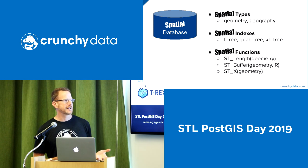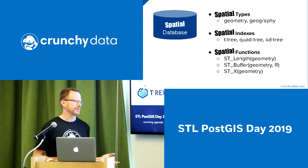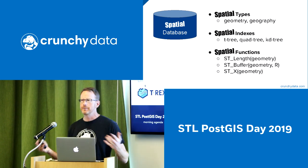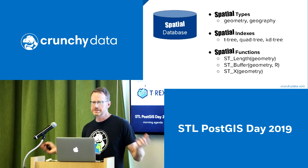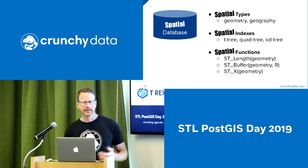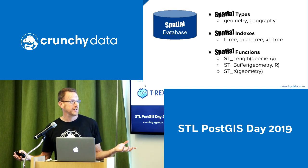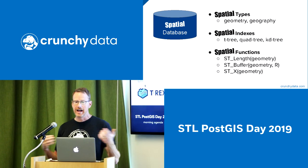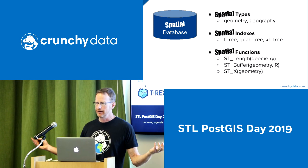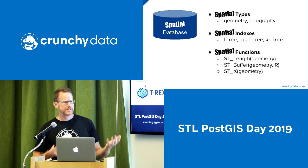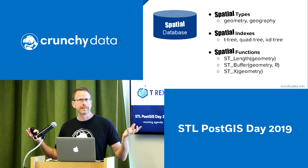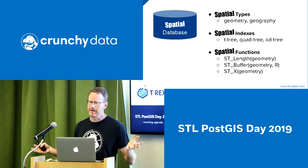In addition to the primitive types, you have spatial types. Your columns can include text, dates, numbers, and they can also include geometries and geographies. You have indexes that make sense against those spatial types — not one-dimensional indexes like B-trees, but multidimensional indexes like R-trees, Quad-trees, and KD-trees. And then you have functions that understand those types: what is the length of that geometry, how far apart are two geometries, or do they touch each other?